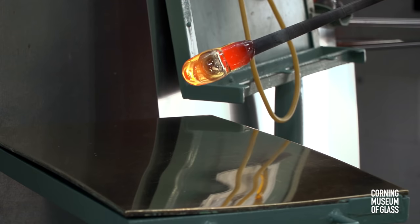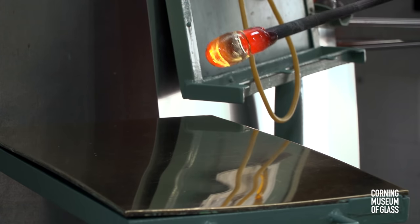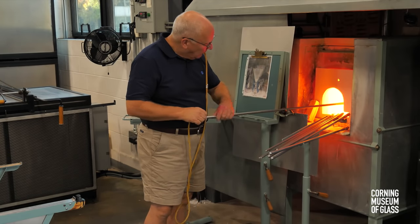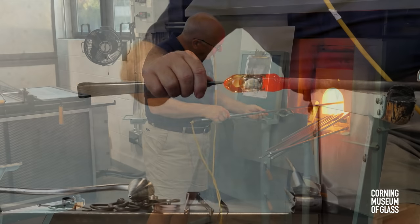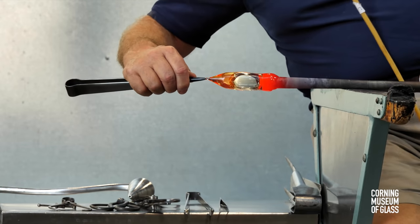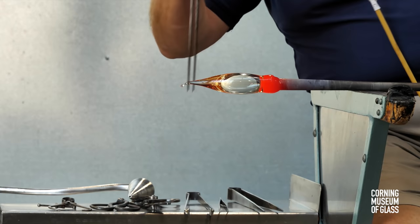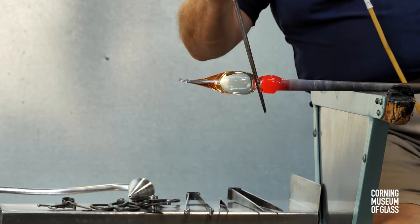Air is blown in, and the tip is left thick. After reheating, the rubber blow hose is used to inflate the glass as work is carried out on the end.